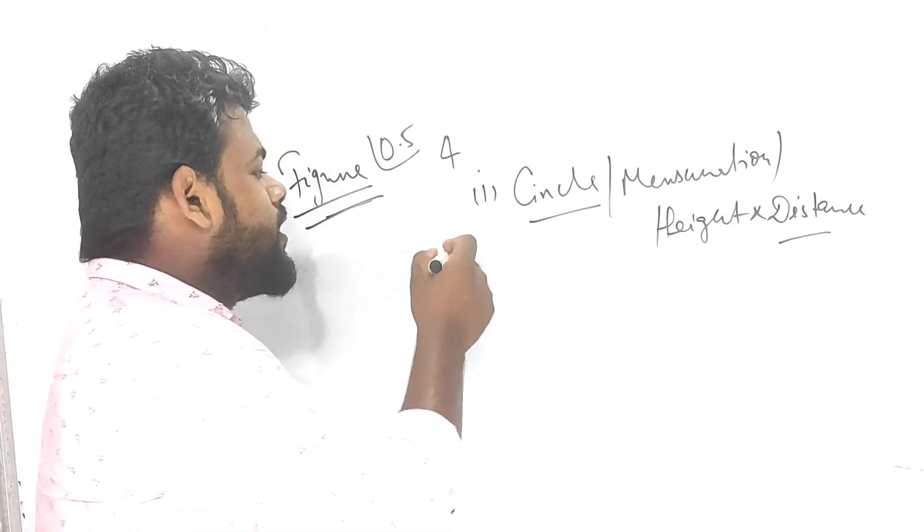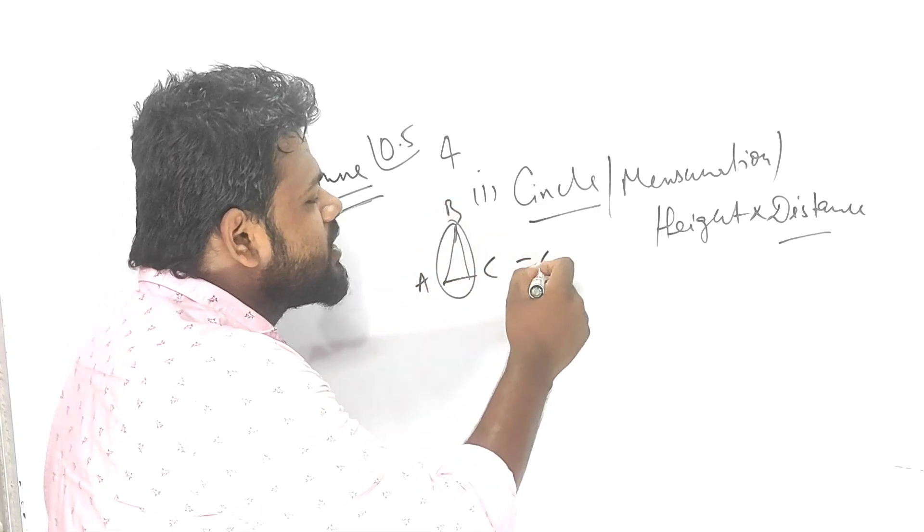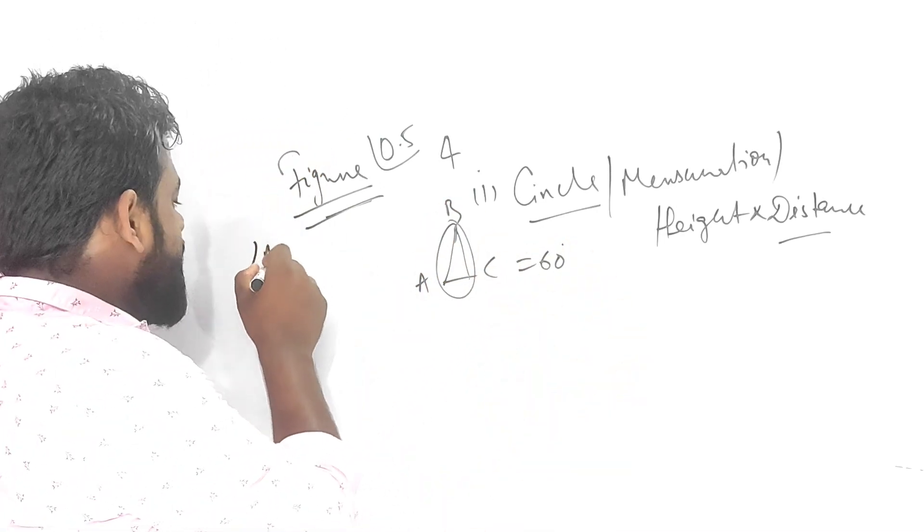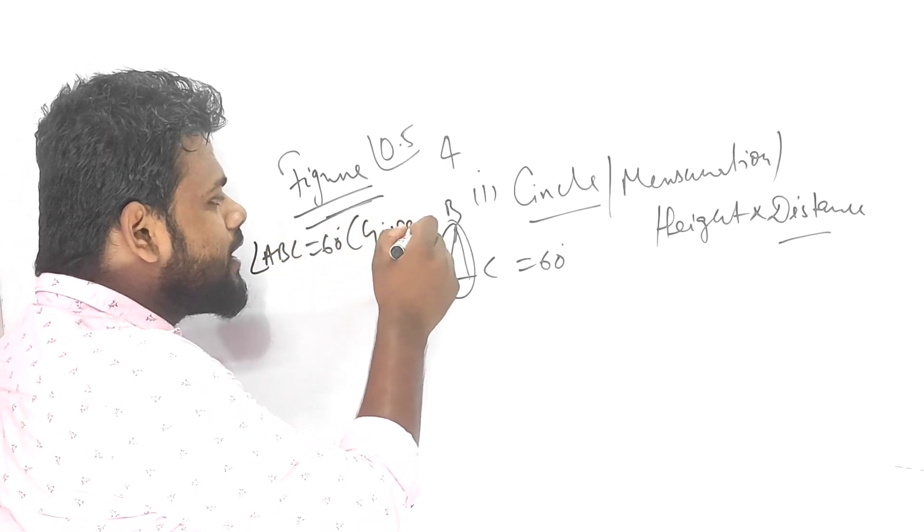Second priority: in the circle, suppose for example a circle ABC, and angle ABC is given somehow as 60 degrees. Therefore angle ABC equals 60 degrees given. In this way you can write it down.